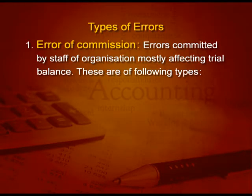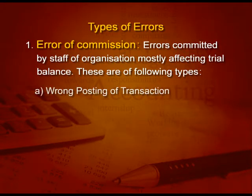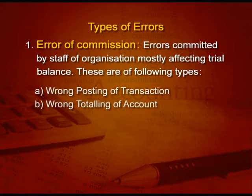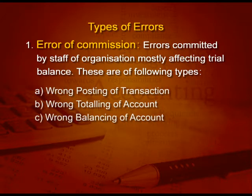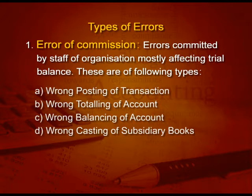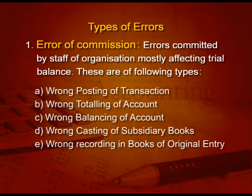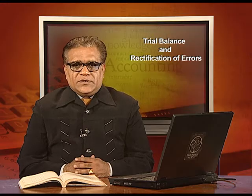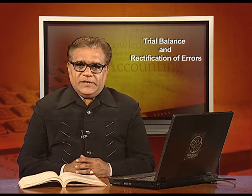These are the errors committed by the staff of an organization, mostly affecting the trial balance. These are of the following types: wrong posting of the transaction, wrong totalling of an account, wrong balancing of an account, wrong casting of subsidiary books — casting means totalling — wrong recording in the books of original entry, etc. These kinds of errors affect the trial balance.